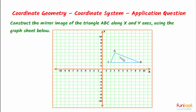Let's do a problem. Here we have to construct the mirror image of triangle ABC along the X axis and along the Y axis. The main approach will be to find the mirror images of points A, B, and C, and then join the points with straight lines to complete the triangle.